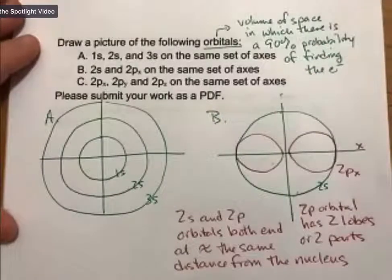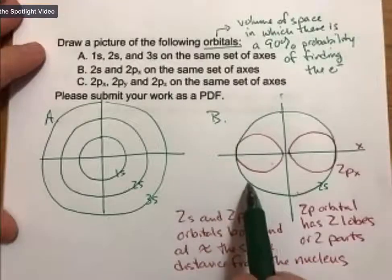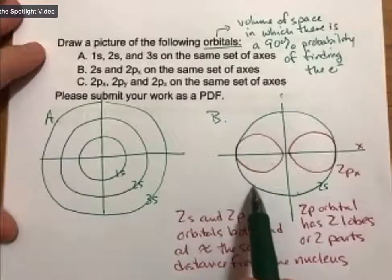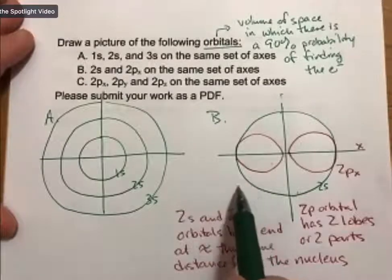Okay, these are 90% probabilities, and the probability outside of each of these orbitals decreases exponentially as you get outside of these spaces.